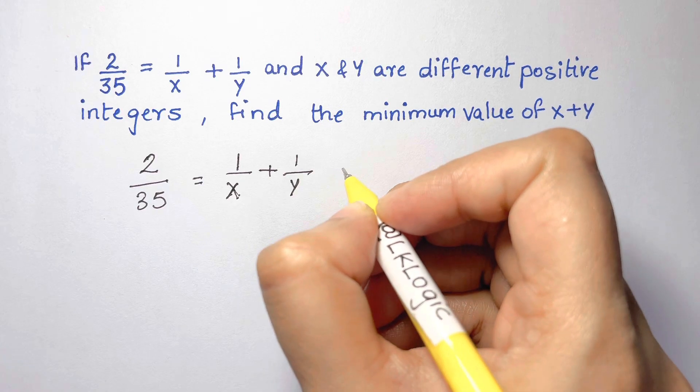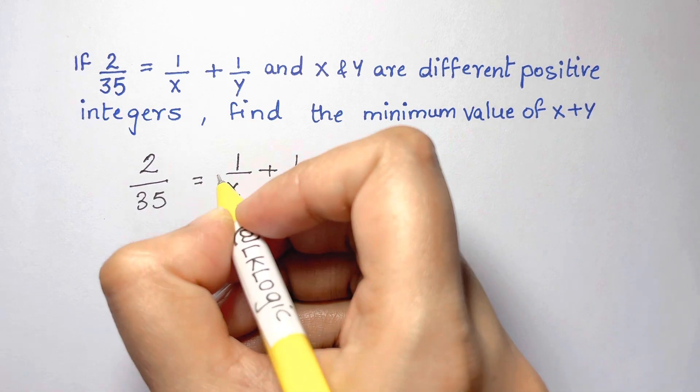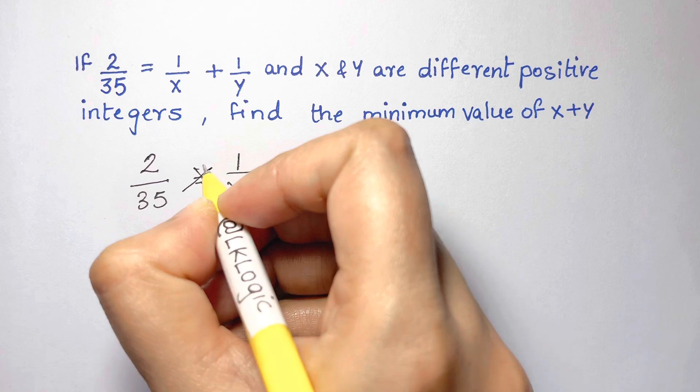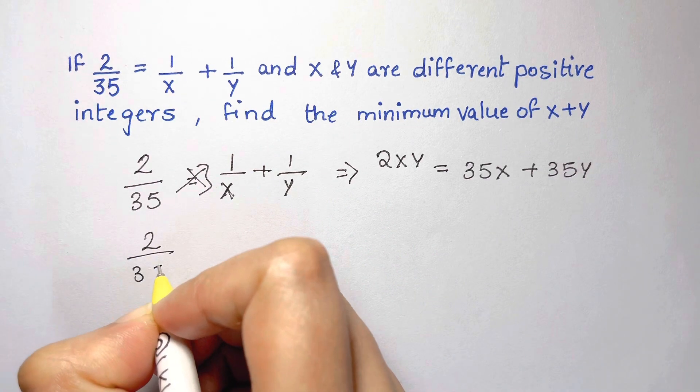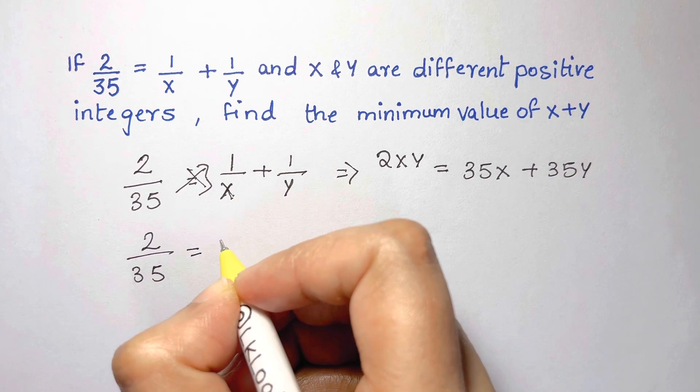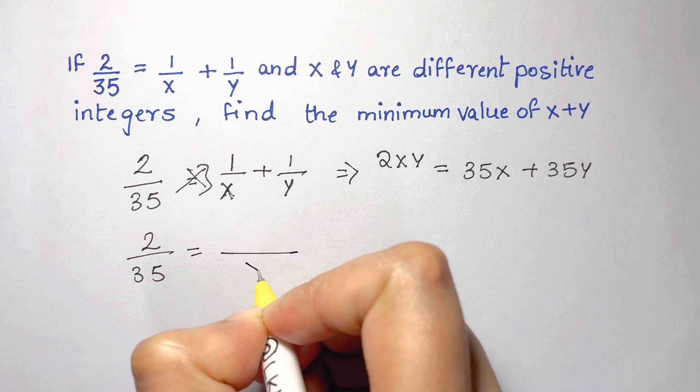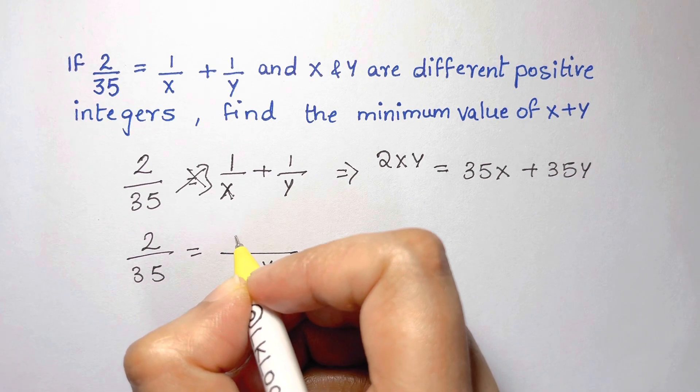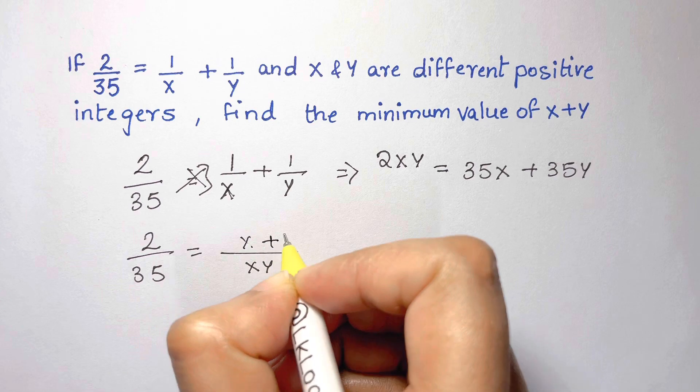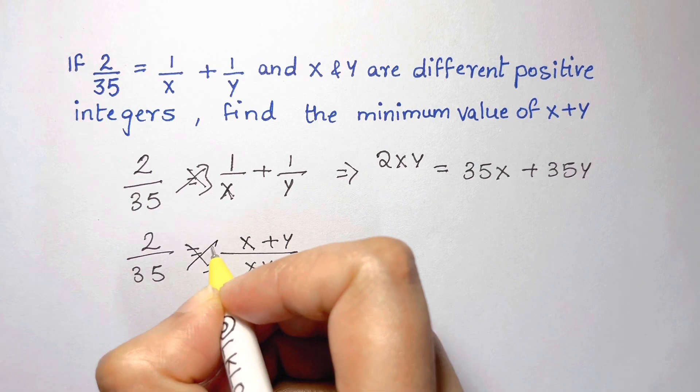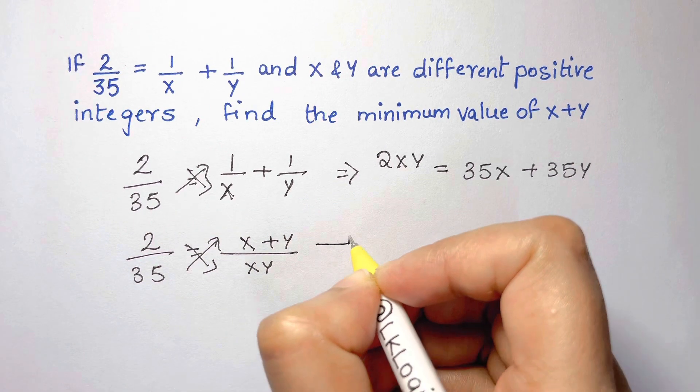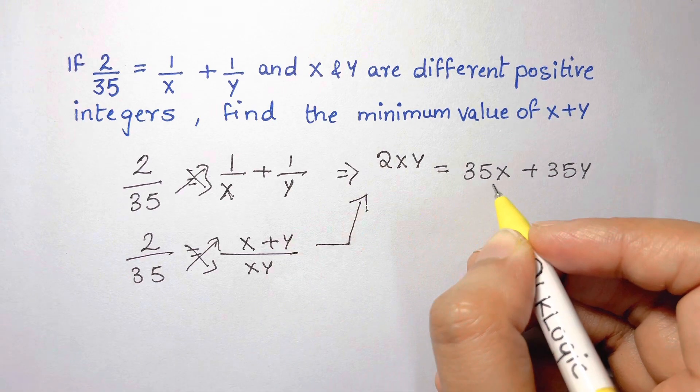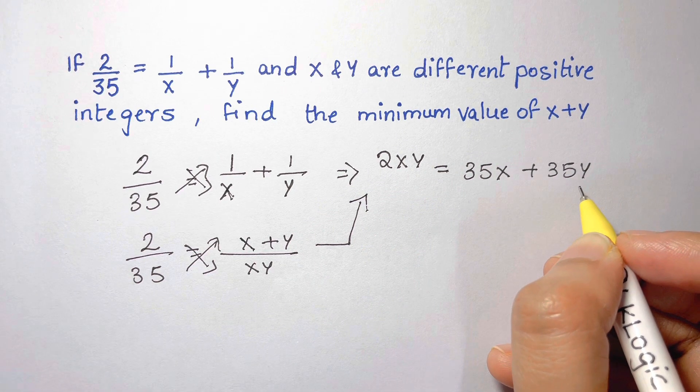Now, I'm going to cross multiply here. That is, you have x, y and then you have x plus y and then you cross multiply things to get this. 2xy equals 35x plus 35y.